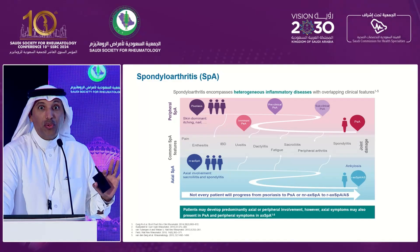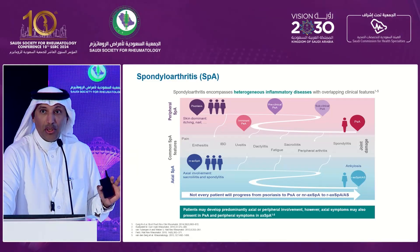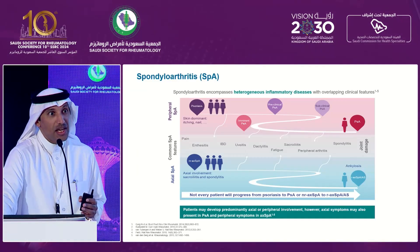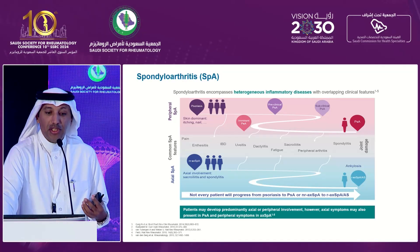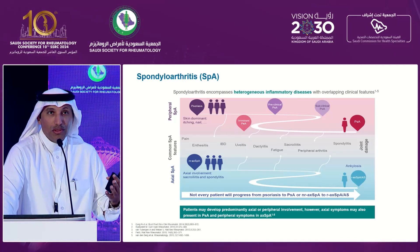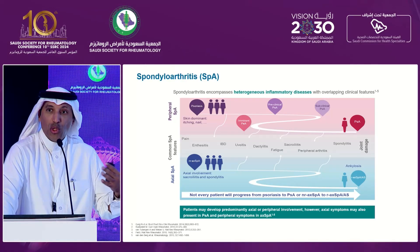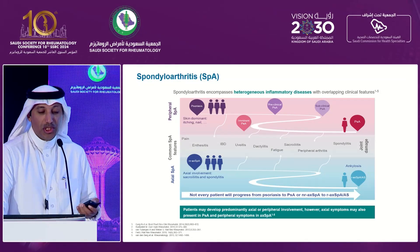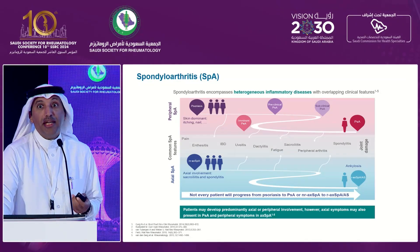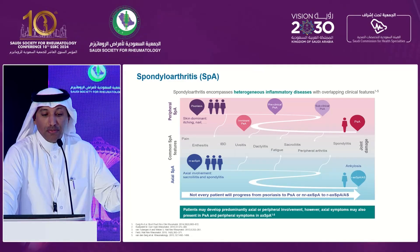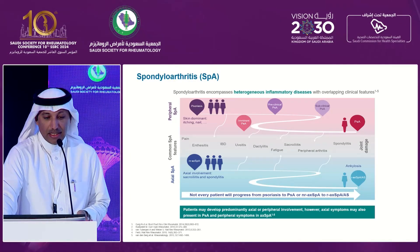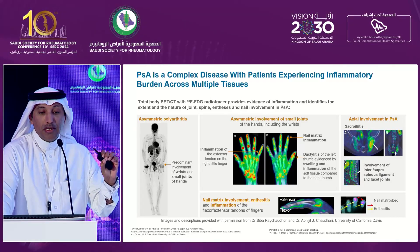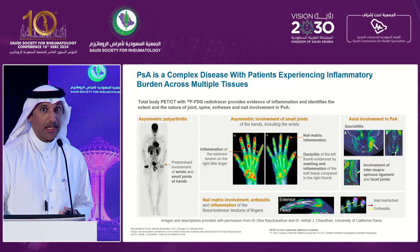It's good to know that SpA, or Spondyloarthropathy, is an umbrella of certain diseases that share common clinical features — either ankylosing spondylitis, which is no more that term; it is now called radiological axial SpA, non-radiological axial SpA, and PsA, which has both peripheral as well as axial SpA. Let us focus more about psoriatic arthritis, PsA.